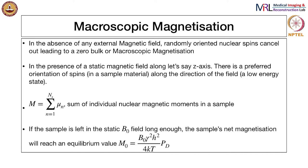The macroscopic magnetization comes from all these individual spins. If you think of our body, we have a lot of water and therefore a lot of hydrogen atoms — mostly protons. They are the overwhelming contribution to the spin. In the absence of any external magnetic field, all these spins are randomly oriented. You can think of these spins like compass needles oriented in random directions, and these randomly oriented spins cancel each other out, leading to zero net bulk or macroscopic magnetization.